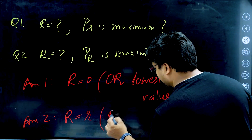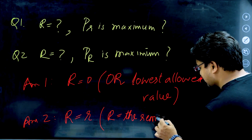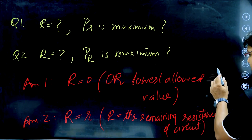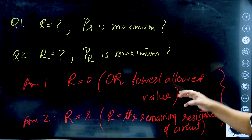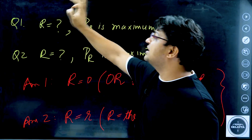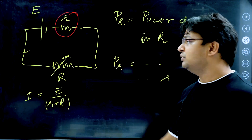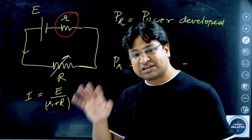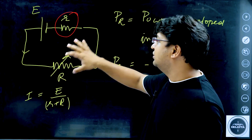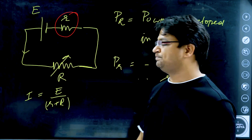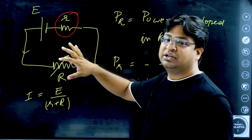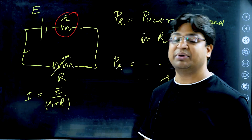So the second answer is that capital R should be chosen equal to small r — or more generally, equal to the remaining resistance of the circuit. The key principle to remember: if you are trying to maximize power in a resistance and you are allowed to change the OTHER resistance, make that other resistance as small as possible. But if you are allowed to change the resistance itself, set it equal to the remaining resistance of the circuit.